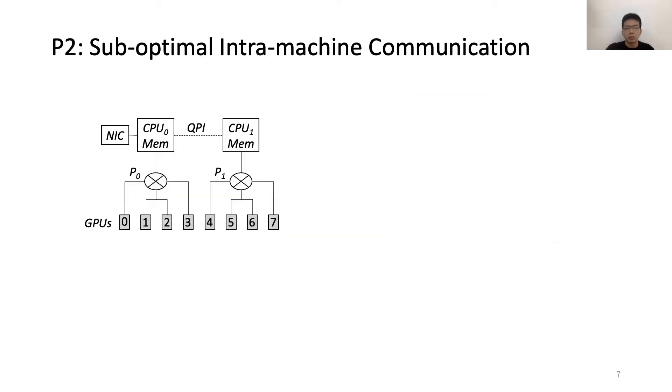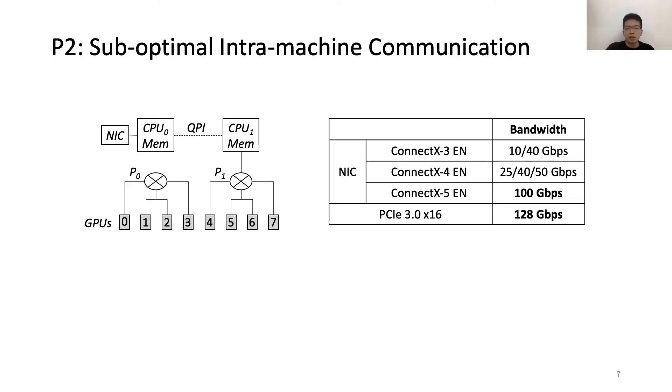Problem two is the suboptimal intra-machine communication. In practice, there are often multiple GPUs in a GPU machine, and the internal topology is also a network with different link bandwidths. Interestingly, we observed that the NIC's bandwidth is now close to the PCIe bandwidth in recent years.